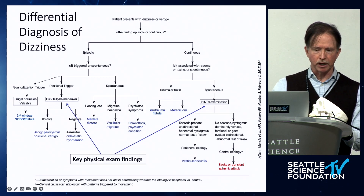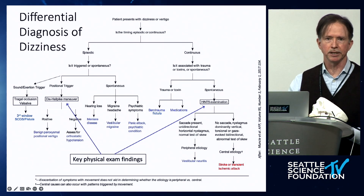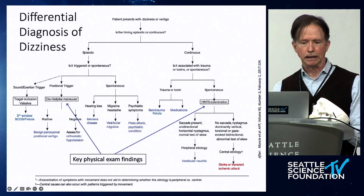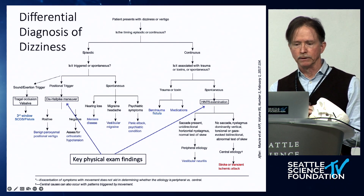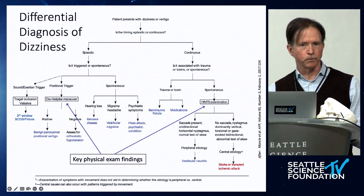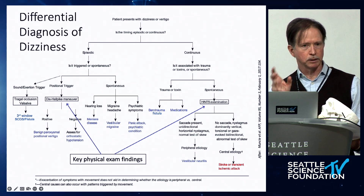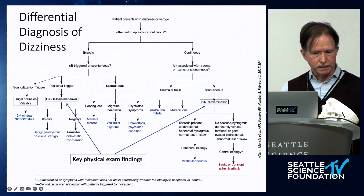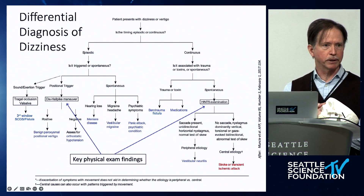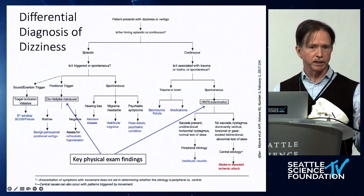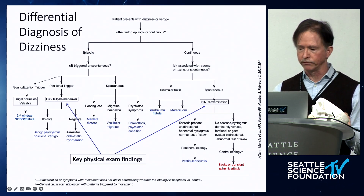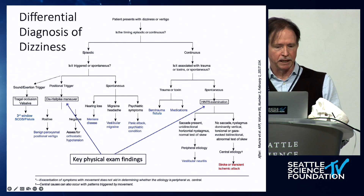Summarizing in a diagnostic flow: think about timing, triggers, and associations to sort out what symptoms patients have. The key physical findings beyond oculomotor testing are positional testing with the Dix-Hallpike, and if concerned about superior canal dehiscence, perform a Tragal test and ask whether tympanometry made them dizzy — that's a simple clue many patients recognize.